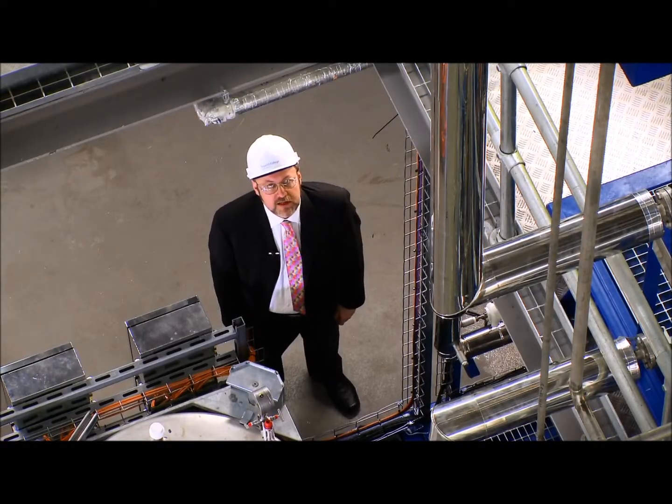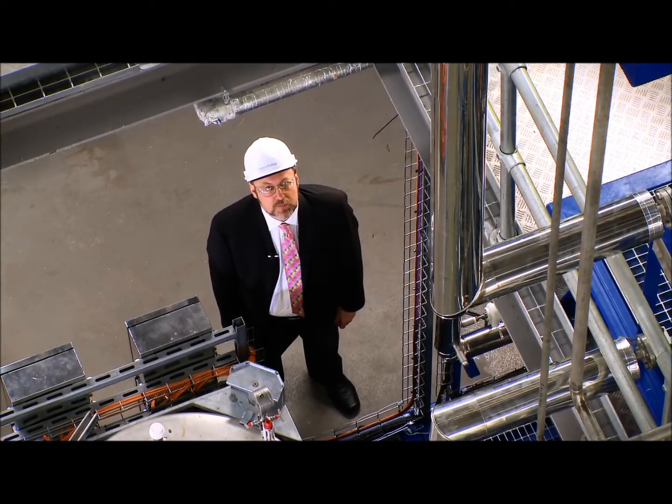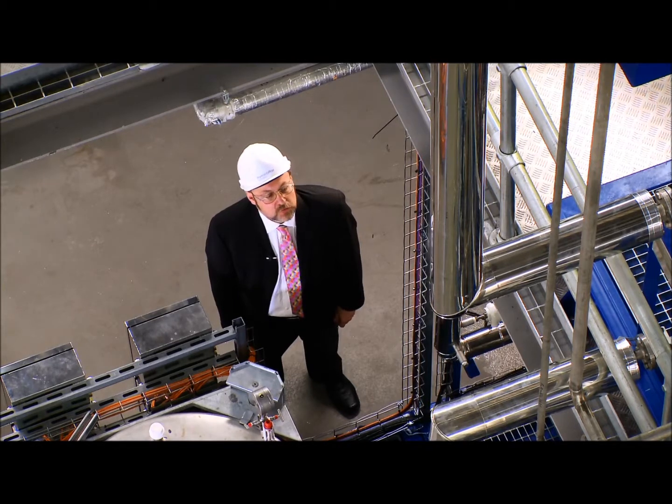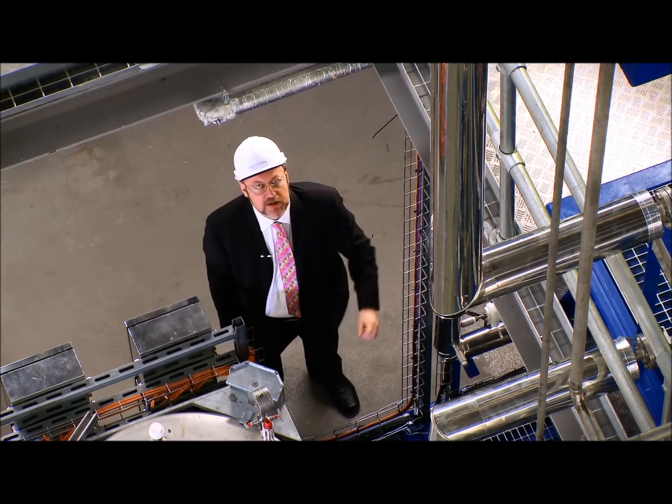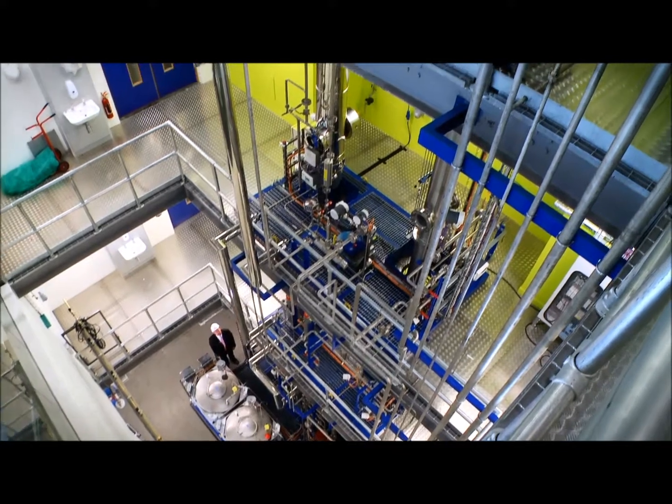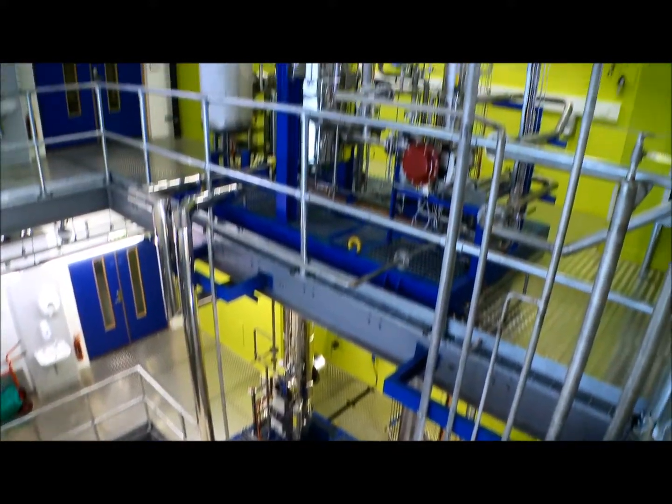A CO2 capture plant is typified by the presence of two columns, a stripper column and also an absorber column we can see here on my left. Ours are 12 metres tall, about the height of three London double-decker buses.